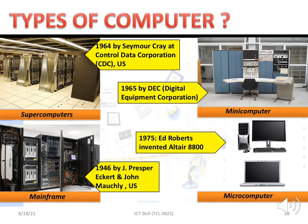This is the last topic: the types of computers. There are four types: supercomputers, mainframe, mini-computer, and micro-computers — each at different levels, from highest to lowest. A brief history: supercomputers were founded in the US in 1964; mainframe in 1946; mini-computer in 1965; and micro-computer in 1975.